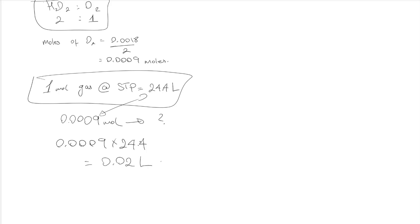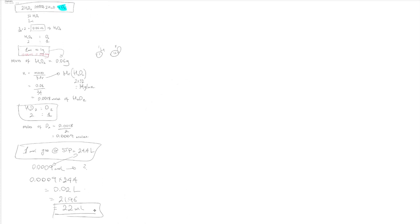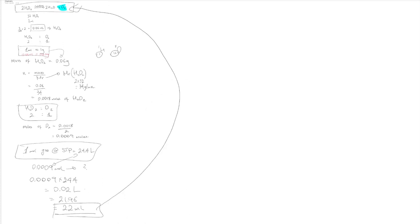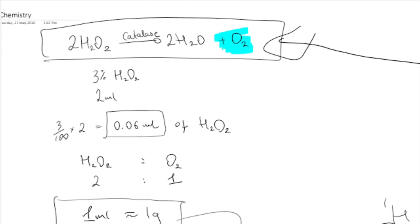And you've got 0.02 liters. If I multiply that by a thousand to change to milliliters, I've got 21.96 or let's say 22 milliliters of oxygen being produced. So from the very top, by putting two milliliters of hydrogen peroxide in there at 3% concentration, you will get about 22 milliliters of oxygen being produced.